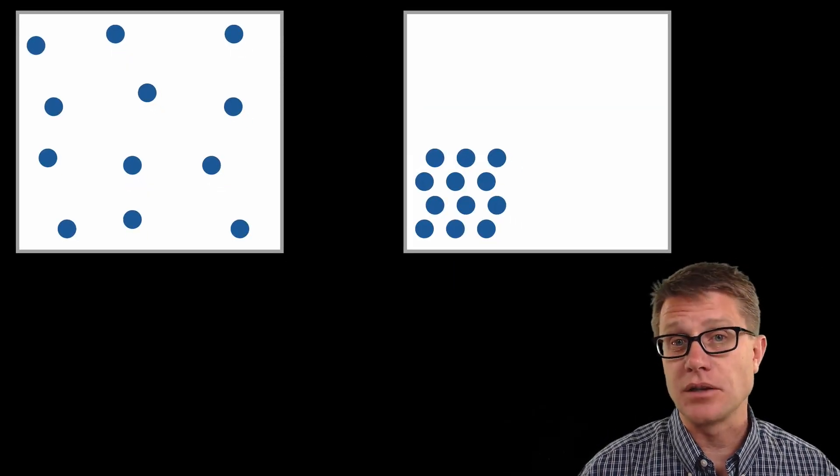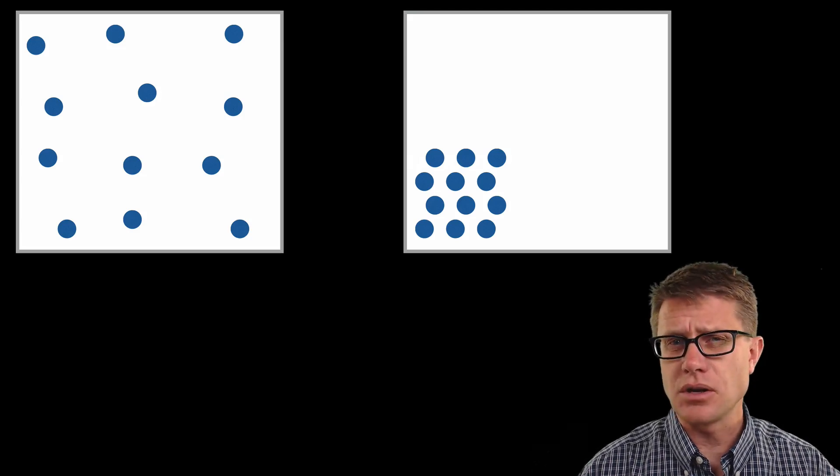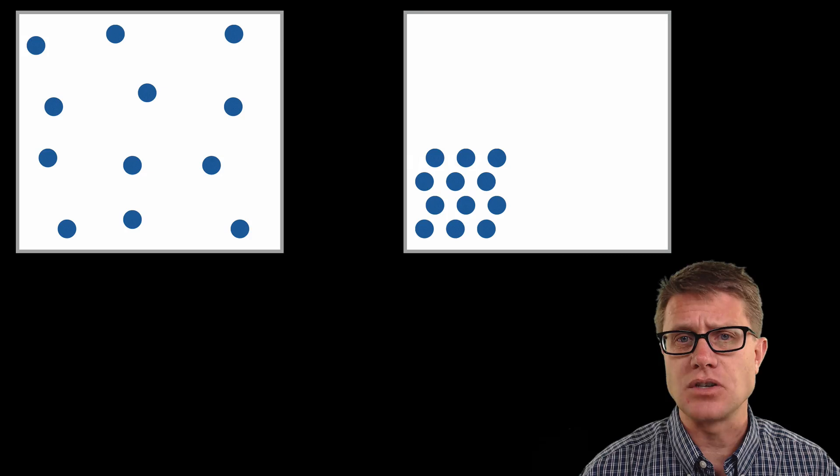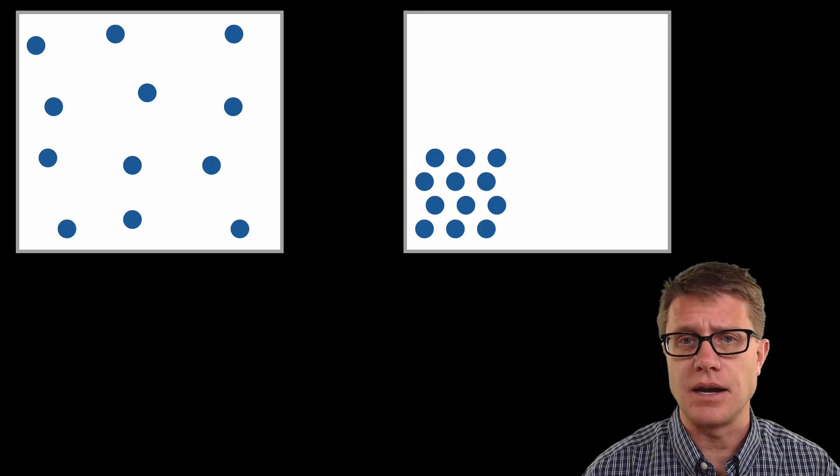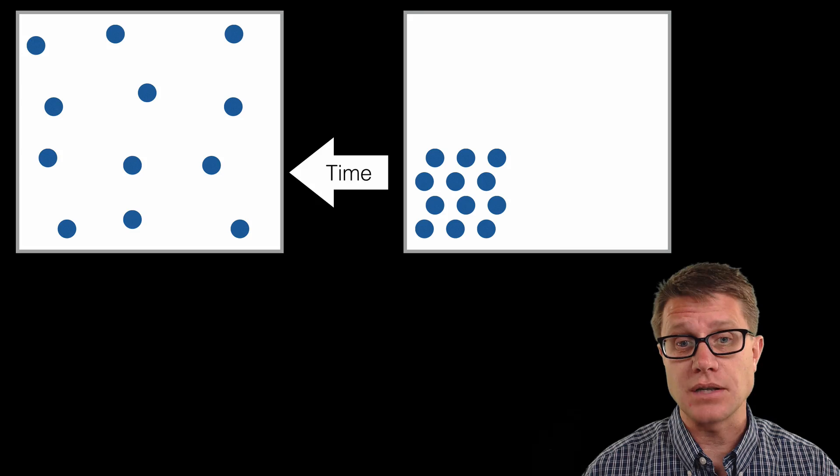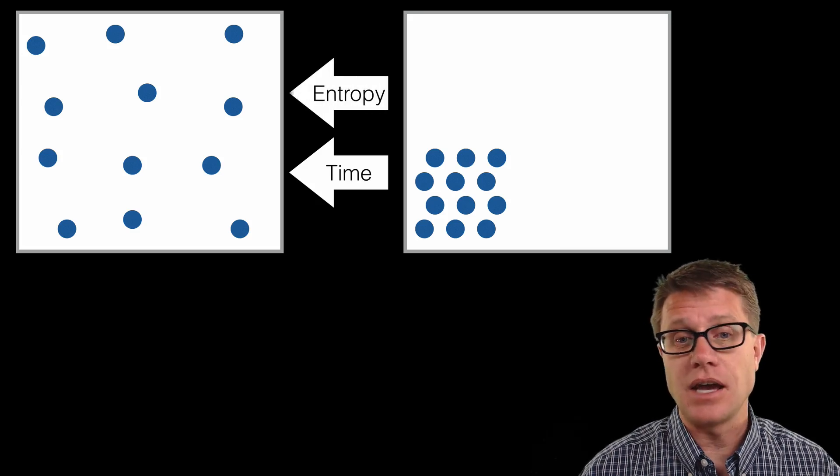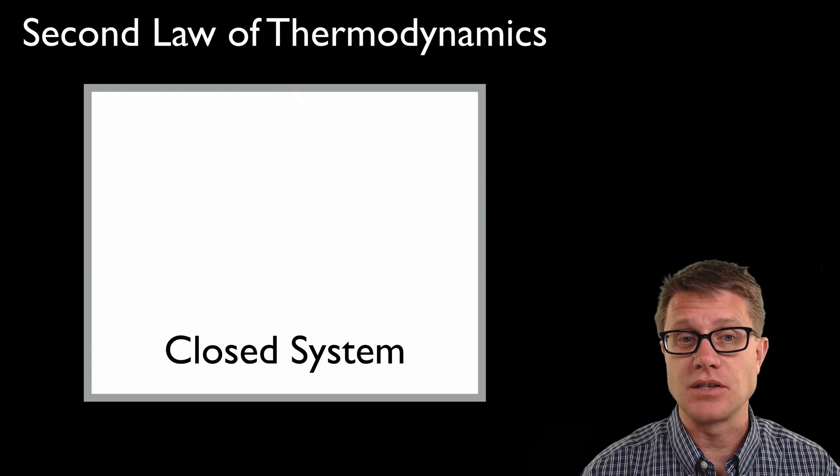On the left we have gas molecules in a container. On the right we have those same gas molecules in a container. Which do you think took place first? Which of these is early and which is later in time? Well, the left is going to be earlier. It's going to become more disordered in time. So what you can do is draw the arrow of time, and then entropy is going to be in that same exact direction.